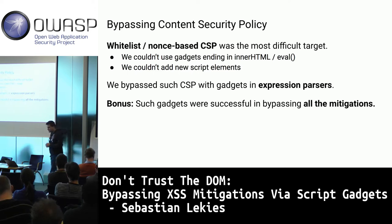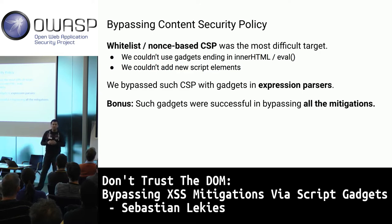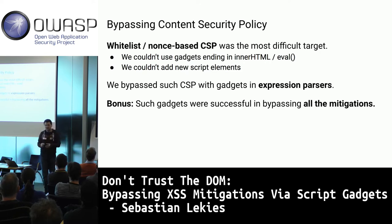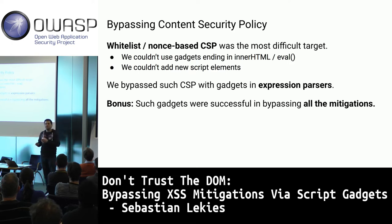Now for the most interesting gadgets — those that bypass whitelist and nonce-based CSPs with no unsafe keywords. These are the hardest policies to circumvent, but we managed it using expression parsers. We found five libraries that ship their own expression parsers — essentially interpreters that build a domain-specific language on top of the framework, without using eval.